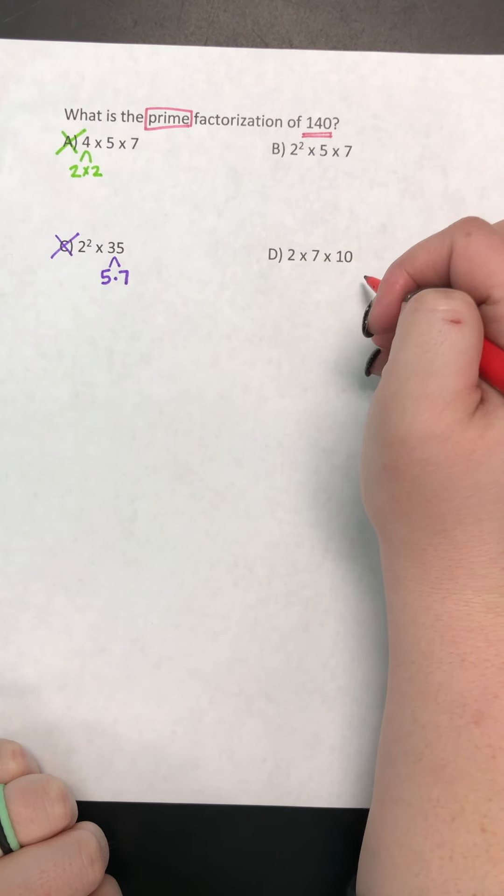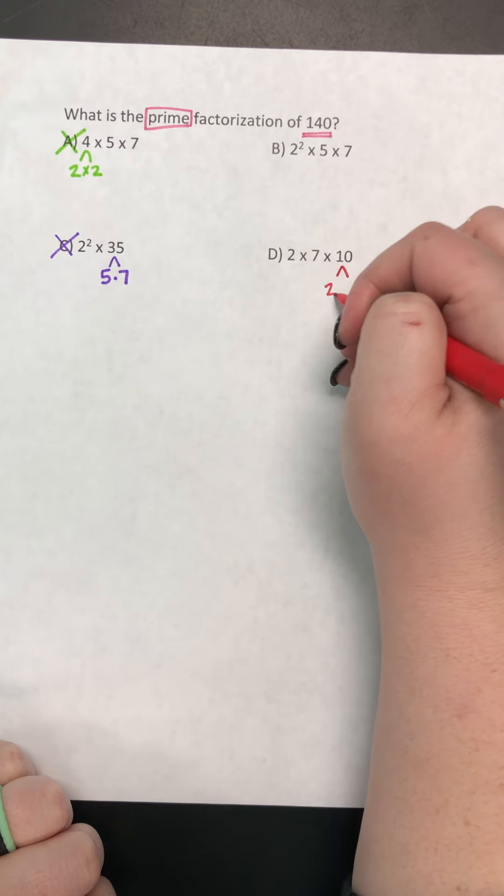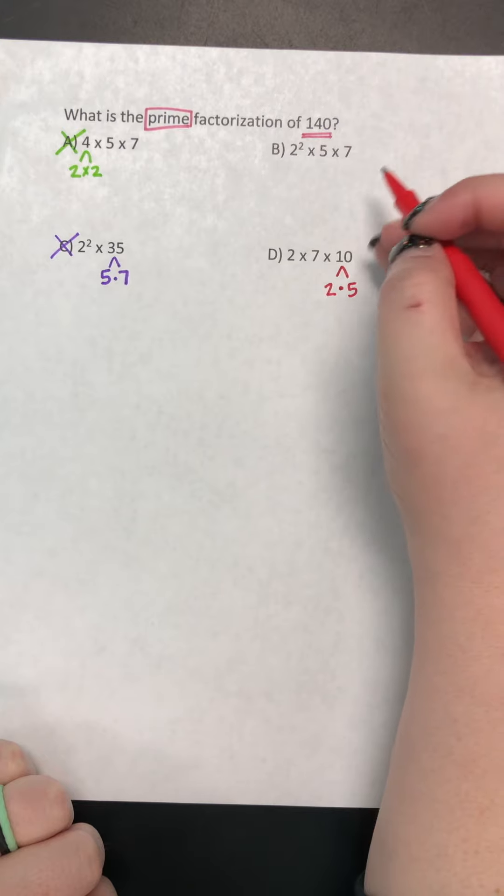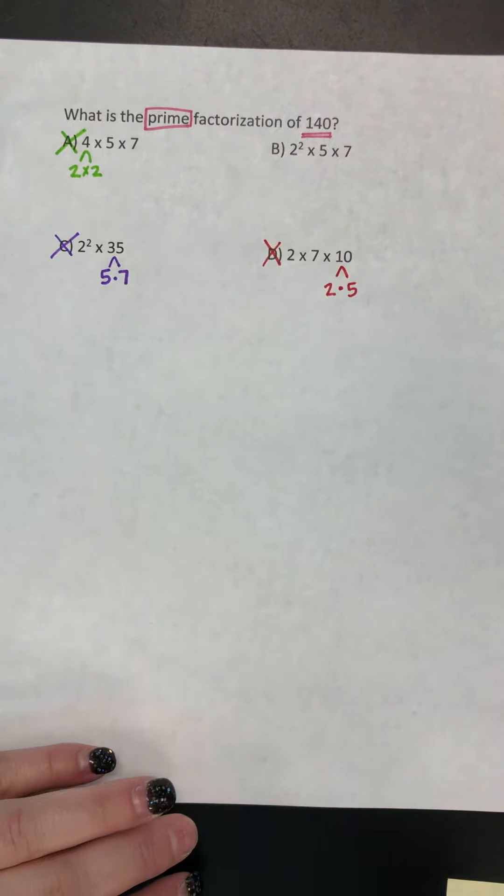So can I multiply to get 10 other than 1 times 10? Yes, I could say 2 times 5. Because I can break down 10, it is a composite number, and therefore it could not be a prime factorization.